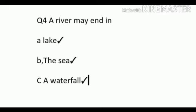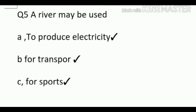Fourth question: a river may end in lake, the sea, and water. All answers are correct. Next question: a river may be used. What are the uses of a river? Three options, all correct: to produce electricity, for transport, for sports. These are the uses of rivers. All of you correct it.